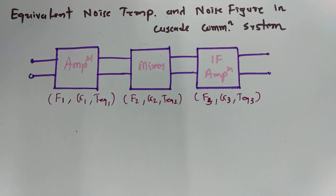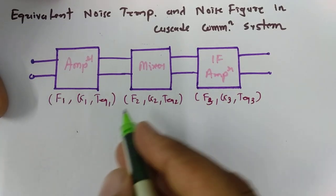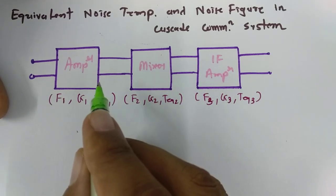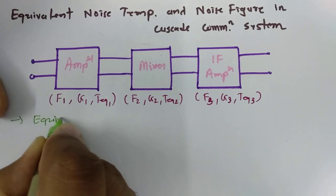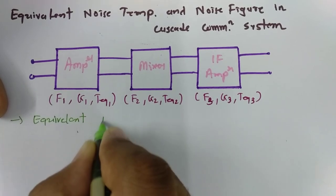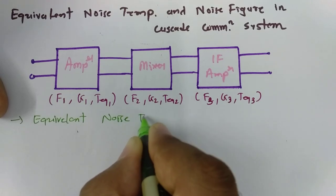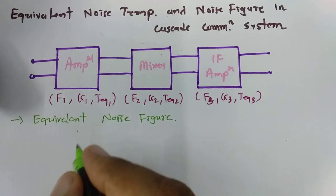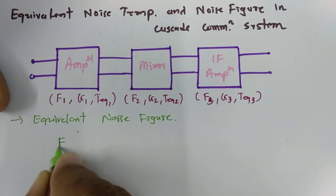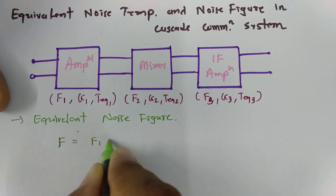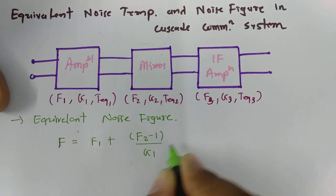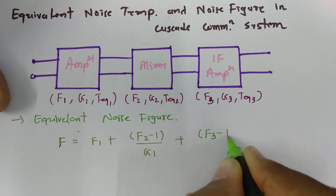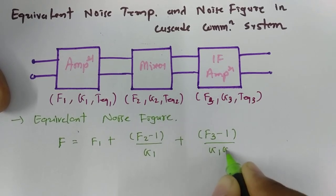Given this data, we can calculate the equivalent noise figure. The equivalent noise figure F is: F = F1 + (F2 − 1)/G1 + (F3 − 1)/(G1·G2).